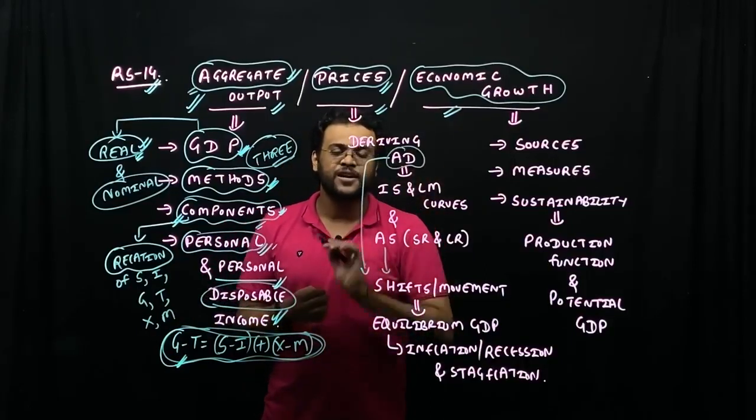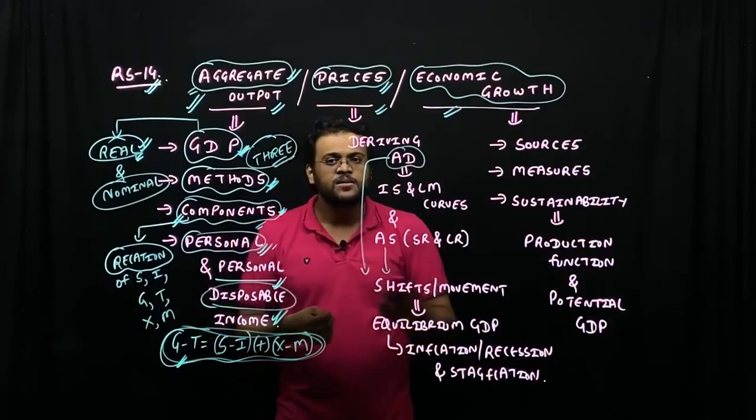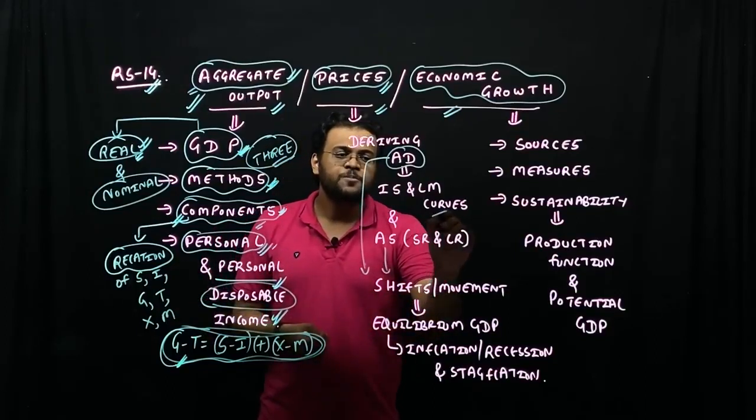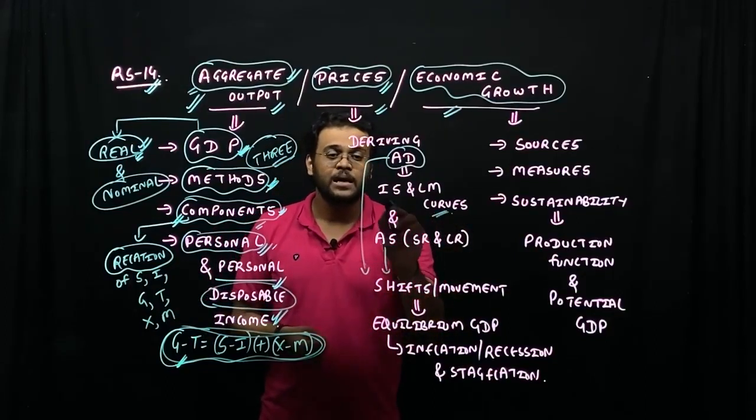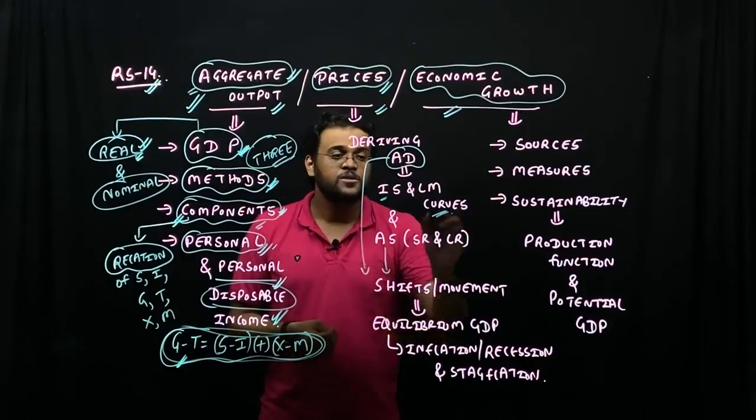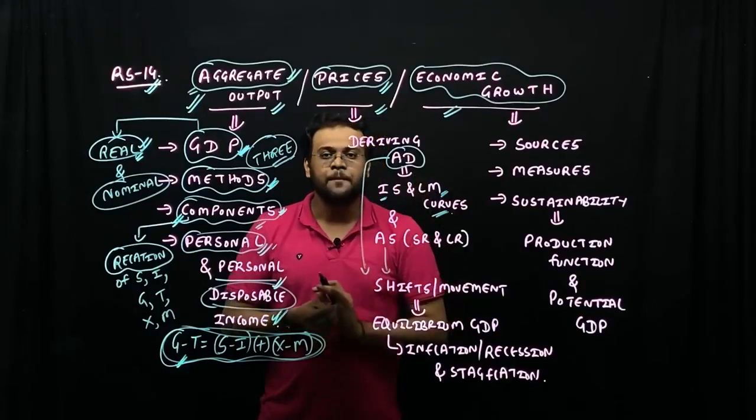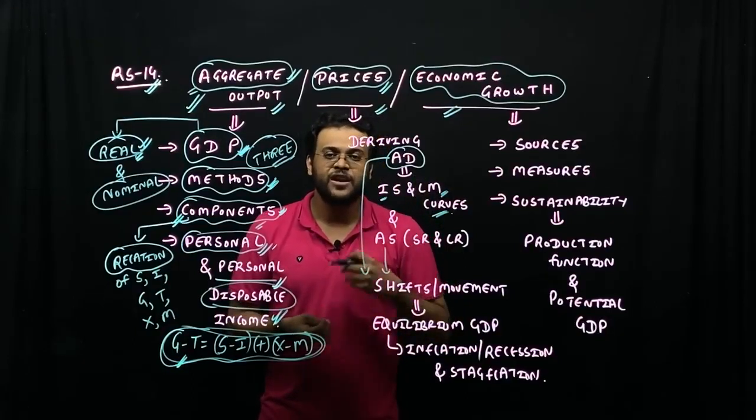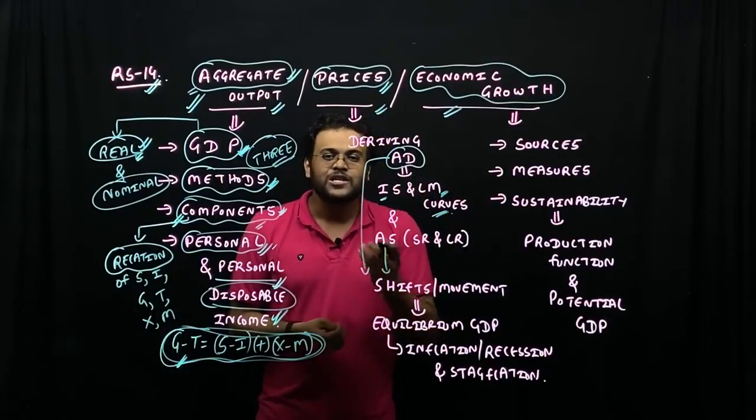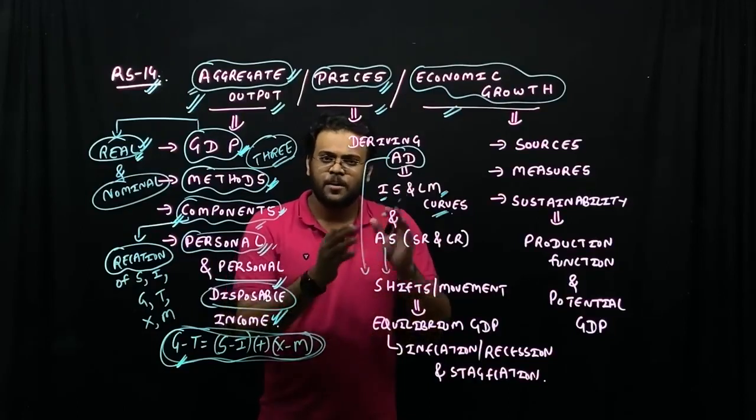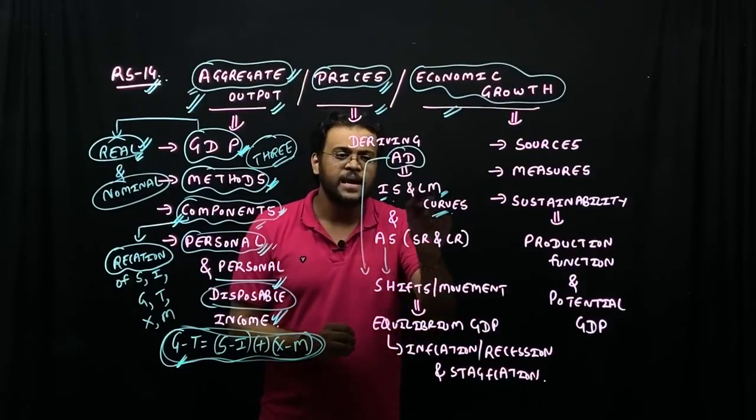we need to understand the aggregate demand—how we derive the demand. For the aggregate demand, we have two curves to learn: one is the income savings curve, IS, and the other is the liquidity money curve, LM.